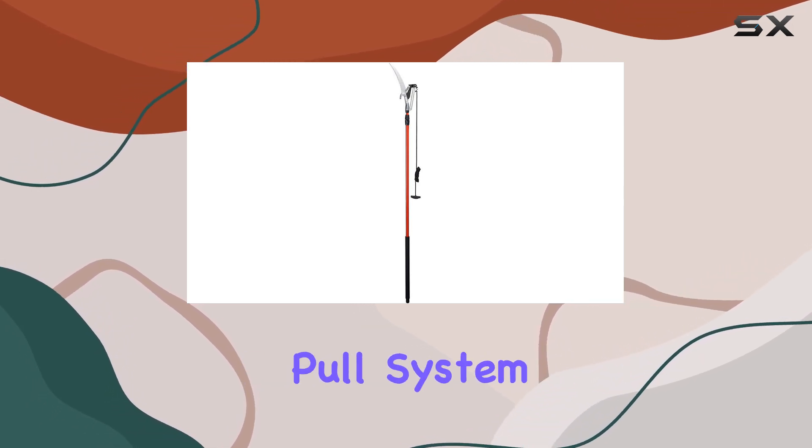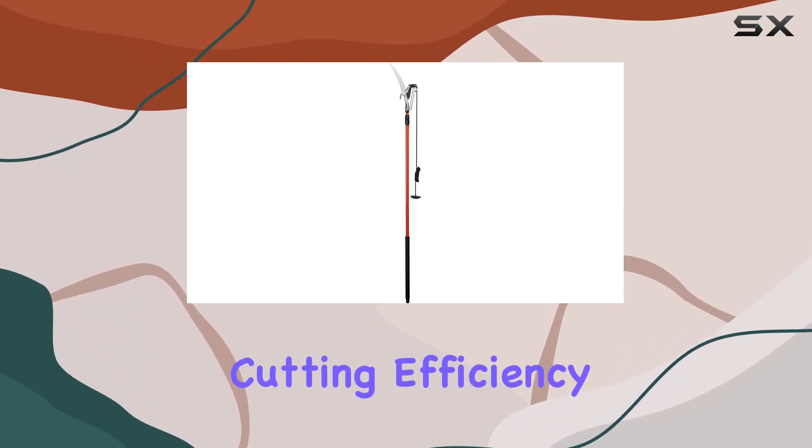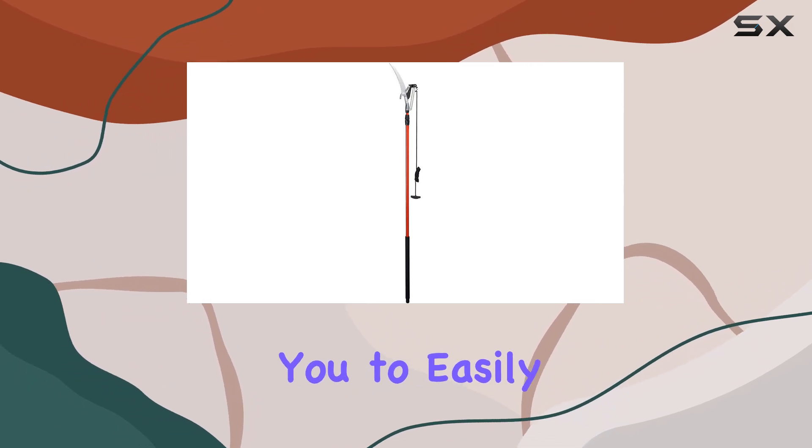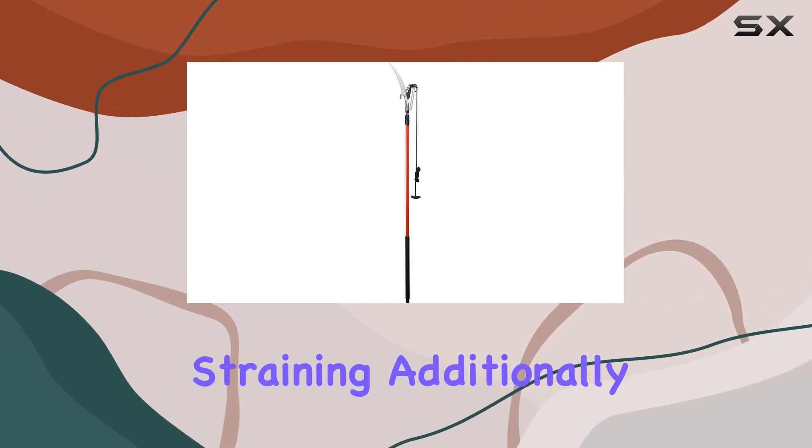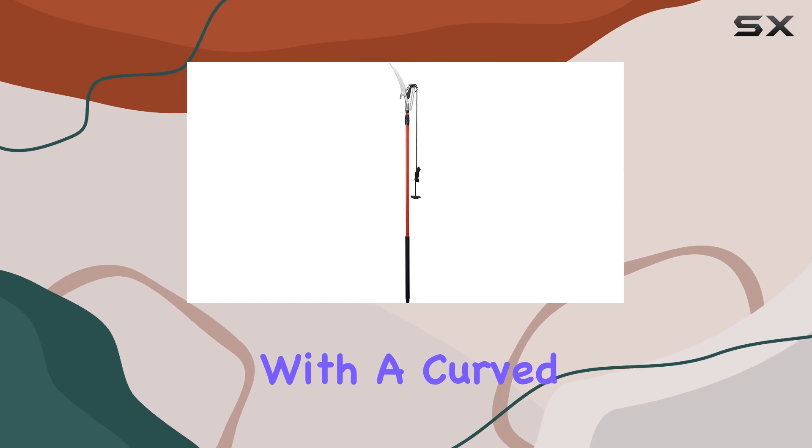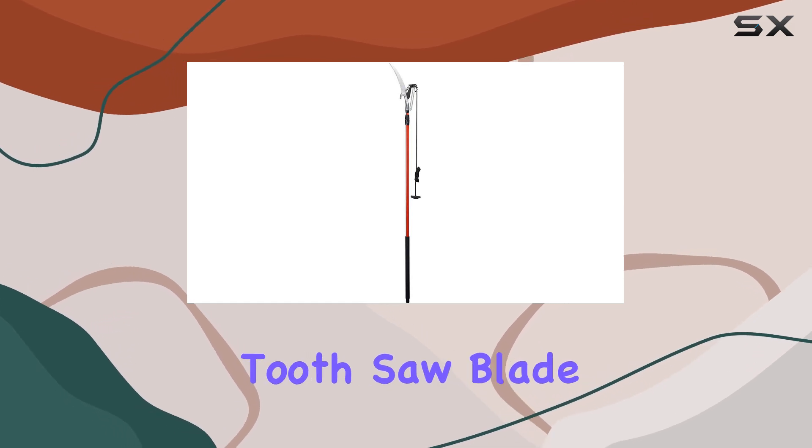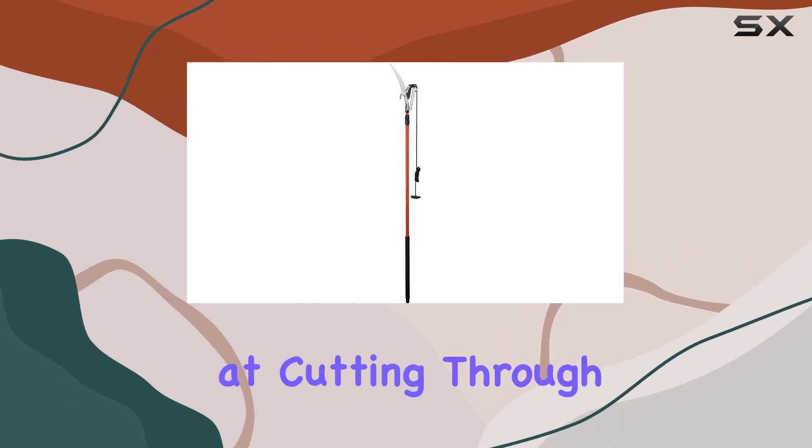The exclusive PowerGlide Rope Pull System enhances the cutting efficiency by allowing you to easily maneuver the tool without straining. Additionally, the pruner comes with a curved 13-inch razor tooth saw blade that excels at cutting through thicker branches.